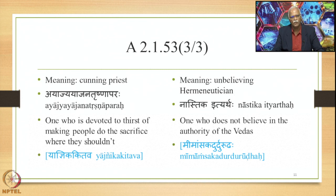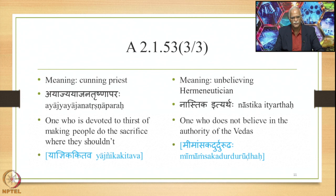Similarly, the compound Yadnika Kithava means 'a cunning priest' — one who is devoted to making people perform unnecessary sacrifices for personal gain. Yadnika is the Kutsita, and Kitava is the term expressing censure. Since Kutsitani is in Prathama, Yadnika occupies the first position in the compound output.